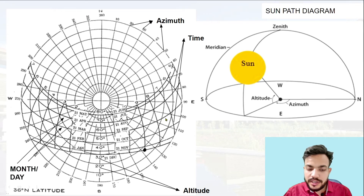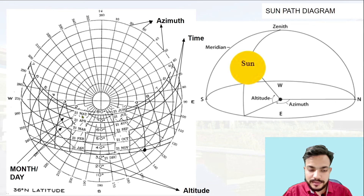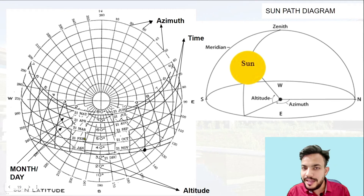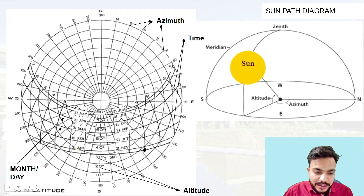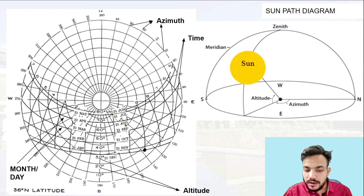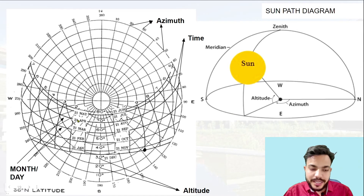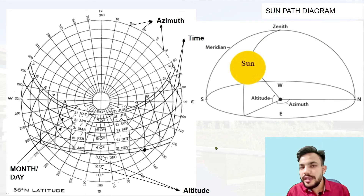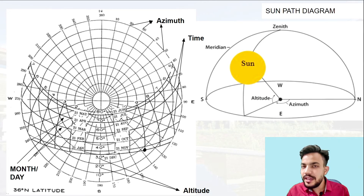Now look at the other set of curves — I'm calling them horizontal curves, just to distinguish them — these are the circles on the diagram. These circles represent different days or different months. You can see the different months: 21st of January, 21st of February, March, April, May, June, July, August, September, October, and November. You can take the value of the day or month from these circles. After knowing azimuth, altitude, time, month, and day, it becomes very easy to locate the position of the sun.